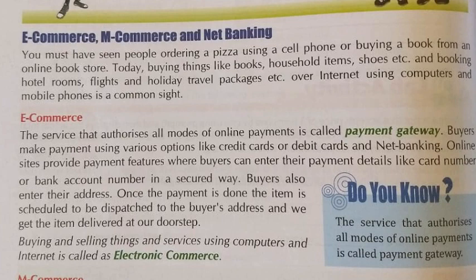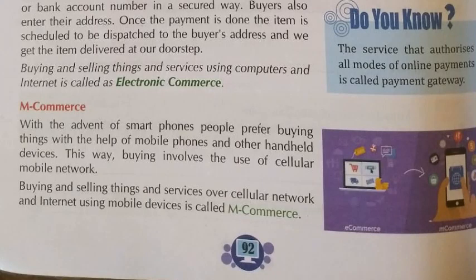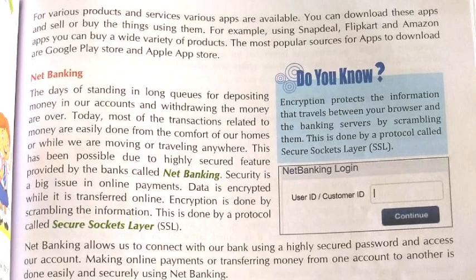Whatever websites you see on your computer where you buy and sell things — those are electronic commerce. Nowadays people prefer buying things with the help of mobile phones and other handheld devices. This buying involves the use of a cellular mobile network. Buying and selling things and services over the cellular network and internet using your mobile devices is called m-commerce. Whatever apps you see, those are m-commerce.